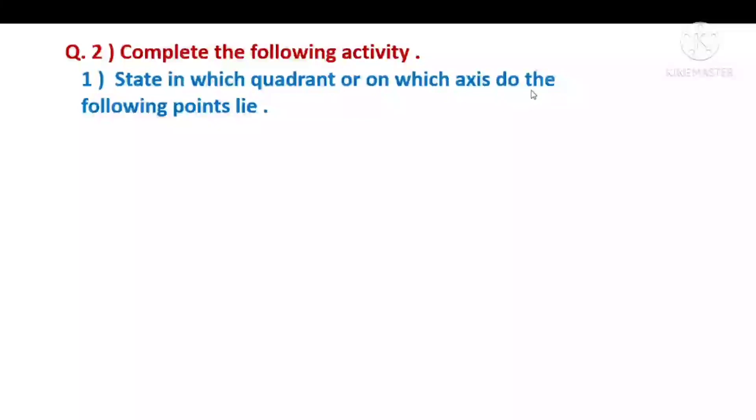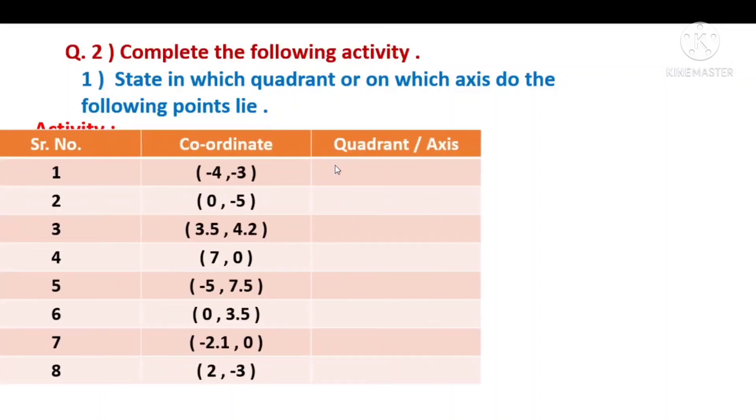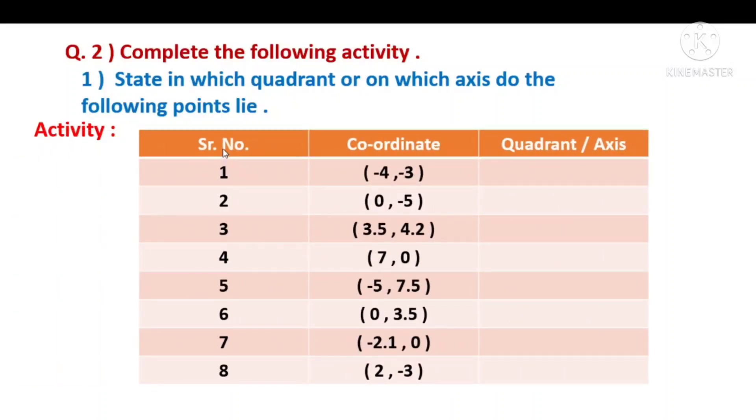Question two: complete the following activity. First, state in which quadrant or on which axis do the following points lie. The activity chart shows serial numbers 1 through 8. First coordinate is (-4, -3). Which quadrant or axis is this on? Both points are negative, minus minus. Where do minus minus come? In the third quadrant. Answer: third quadrant.